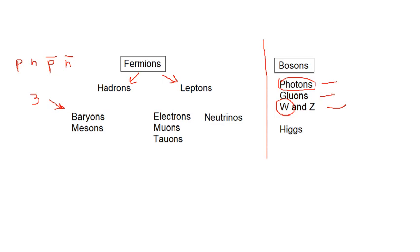Then mesons are middleweight. Mesons are middleweight. They're made of two quarks. And the mesons that we need to know, we need to know kaons, and we need to know pions. Kaons contain a strange quark, and pions contain a quark and an anti-quark.